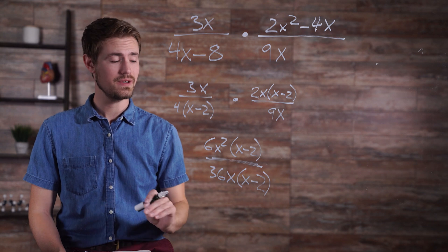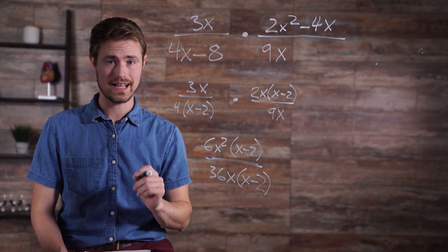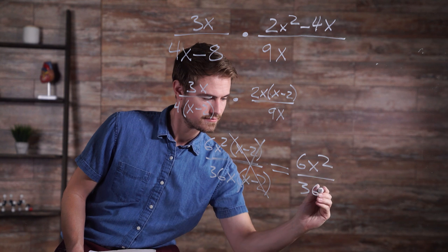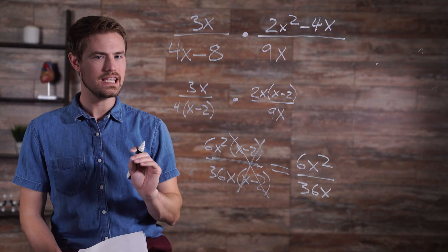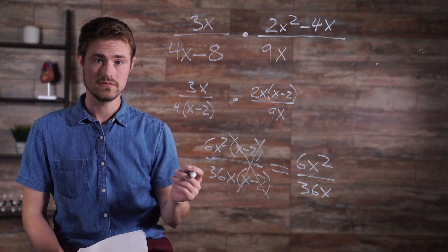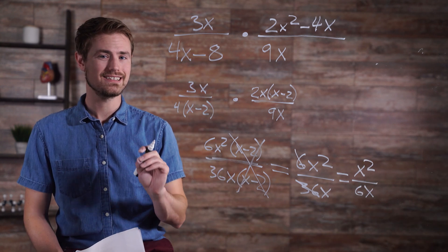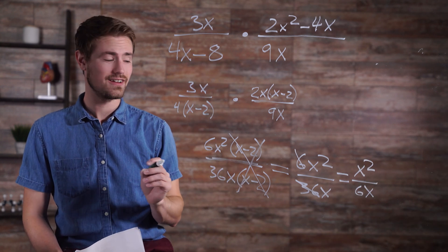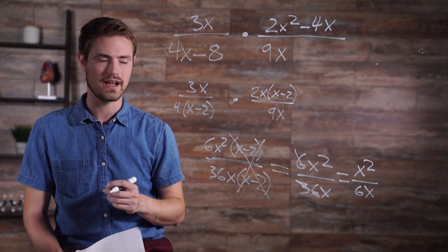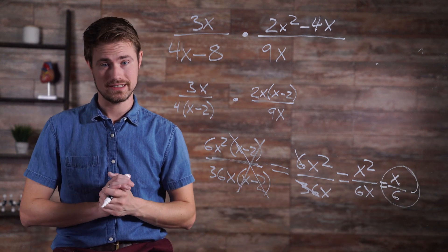Now, because we have like terms in the numerator and the denominator position, we're able to cancel them out. That leaves us with, but we can simplify this even further. Remember, 6 is a factor of 36, so let's simplify. And yet, we can simplify this again. Remember, you have an x in the numerator and an x in the denominator, so let's simplify. And now we have our answer: x over 6.